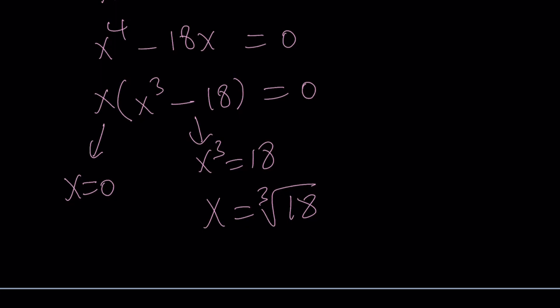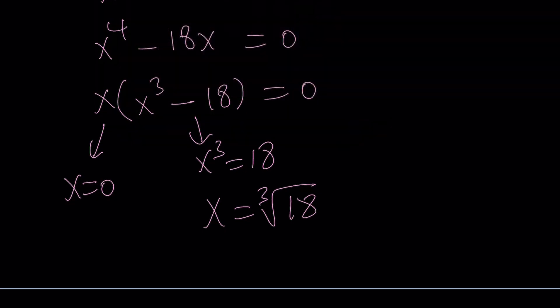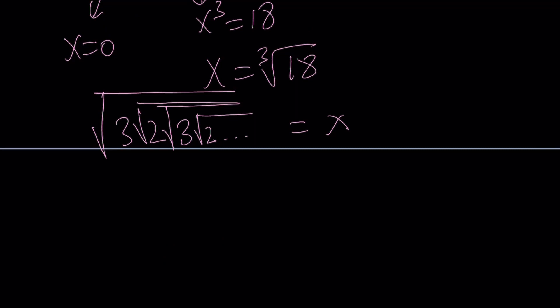What happens with x equals zero? So let's go ahead and take a look at what x is, right? That's going to give us an idea, hopefully. So the original expression was called x. It was the square root of three times the square root of two times the square root of three times the square root of two, so on and so forth. We call this expression x. Can this expression be zero? No way. Because we do know that this expression is actually greater than square root of three.